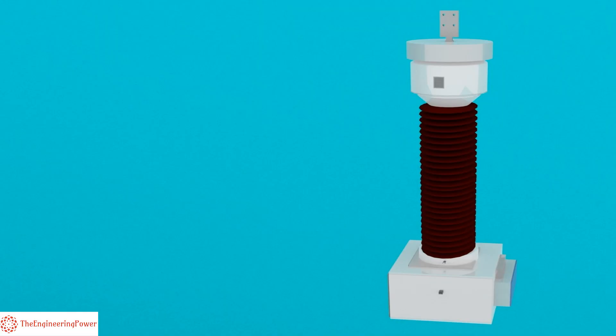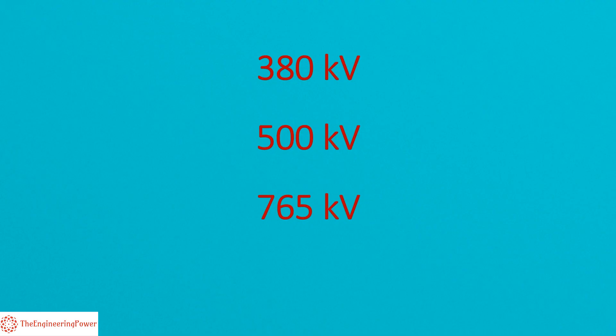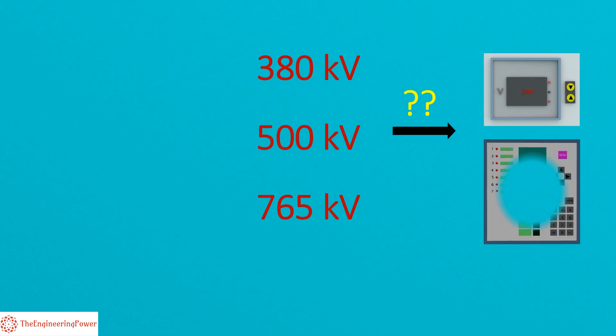PTs can normally be used for voltage levels up to 132 kV or 220 kV. So does it mean that we have to limit the design of our higher voltage power systems to 220 kV only? Obviously not. We have higher voltage power systems in use in the range of 380 kV, 500 kV, 765 kV, and even above. So then how we measure voltages of these high power systems and how we feed such high voltages to protection relays if we can't use PT?